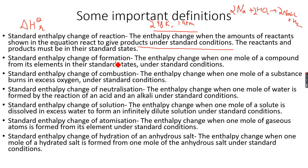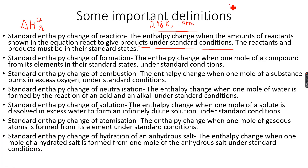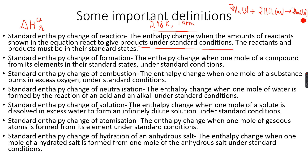The reactants and products must be in their standard states. This makes sense because under standard conditions, every substance is in its standard state. So actually, the equation written here is wrong because whenever we talk about standard enthalpy changes, we have to include the state symbols. So this will be 2Na(s) plus 2HCl(aq), giving 2NaCl(s) plus H2(g). We always have to include state symbols when writing equations for enthalpy changes.